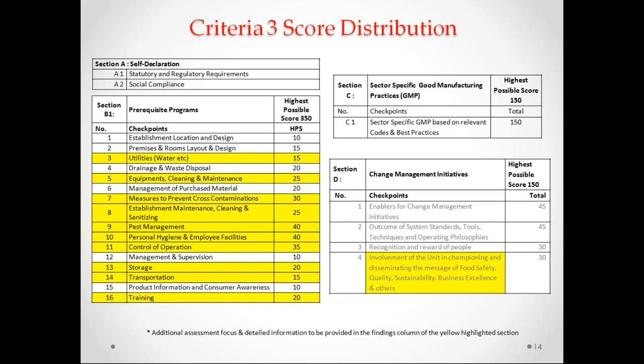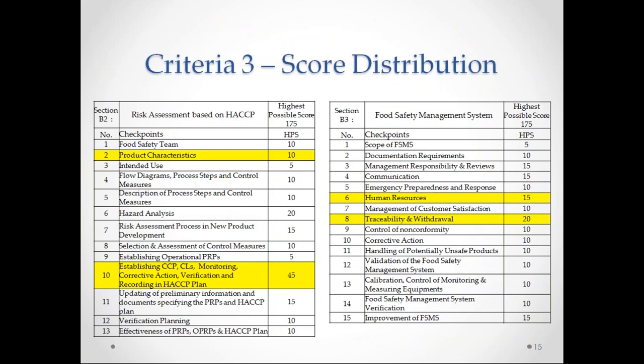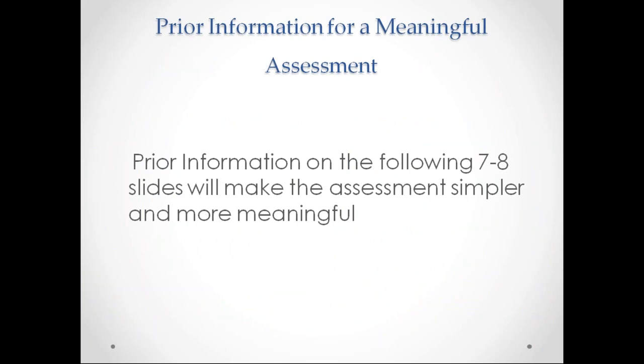On the checkpoints — criteria 3 is just one sample. If you find any highlighted yellow sections in your checkpoints, it means you should focus a little more on the reporting part, as these are priority points the jury gives a lot of attention to. For example, look at Section D — Change Management Initiatives — where the word sustainability has been included. The yellow sections on slide 15 are similarly to be prioritized with respect to reporting.